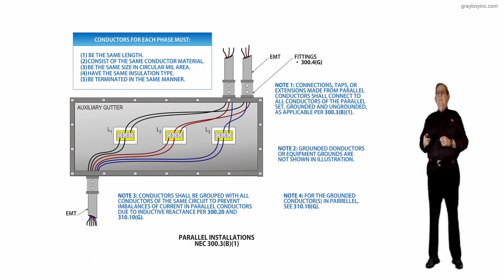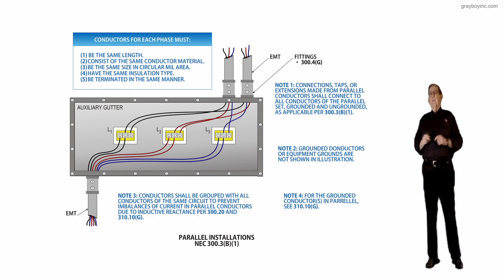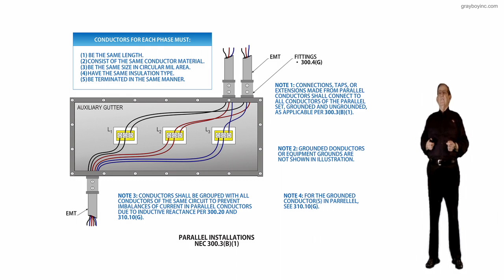Note one states that connections, taps, or extensions made from a parallel set of conductors shall be connected to all conductors of the parallel set, grounded and ungrounded, as applicable per 300.3B1.